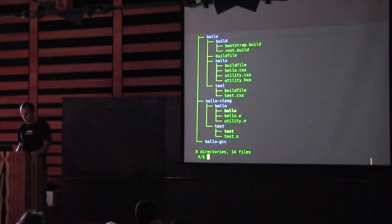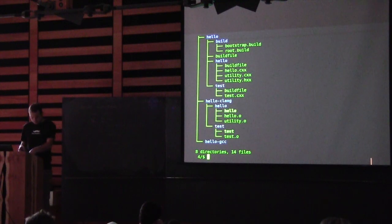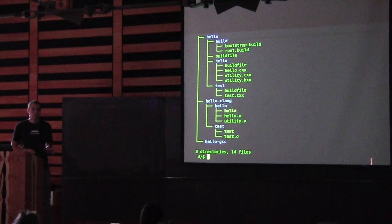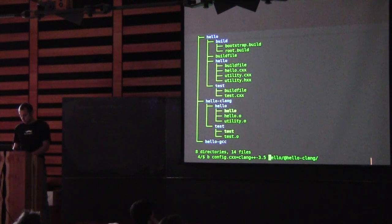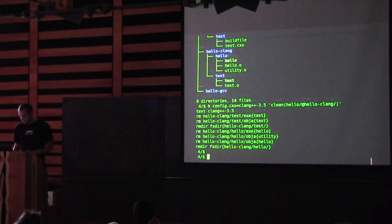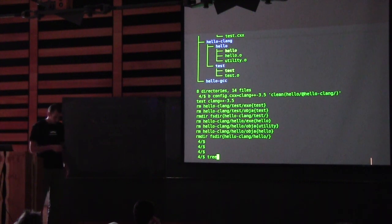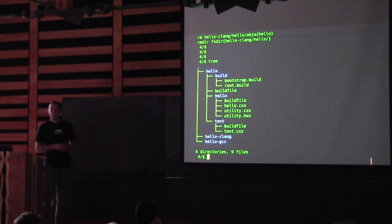Let's look at the tree. We have our source tree, and now we have the output tree with our application and our test. We can also clean it. After cleaning and looking at the tree again, all those directories that were created were automatically cleaned up, and the directory is empty again — it kind of went full circle.